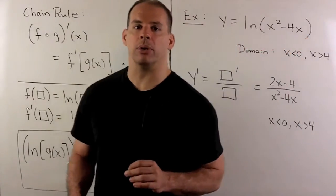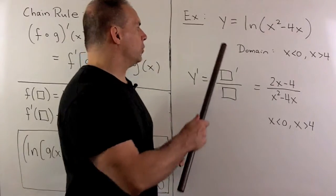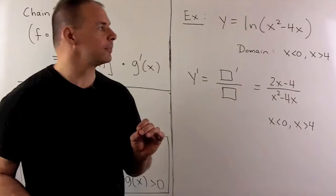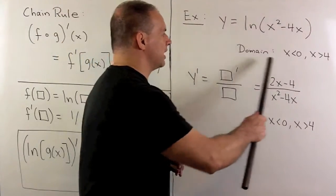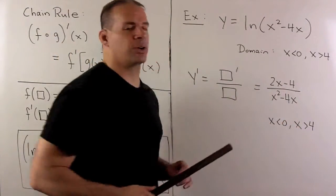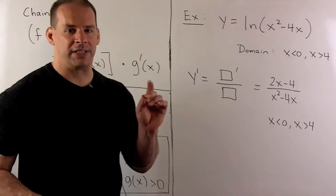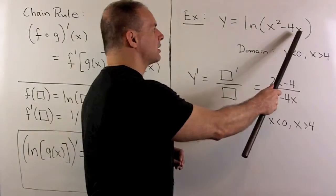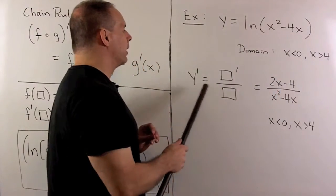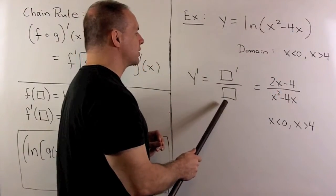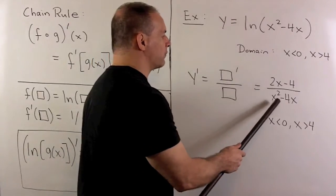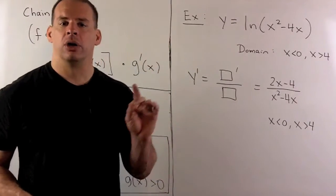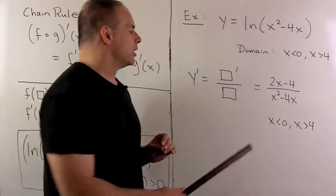Let's apply this to y equal to natural log of x squared minus 4x, whose domain we know is x less than zero or x greater than four. What's in the box is x squared minus 4x, so we get box prime over box: the derivative 2x minus 4 goes in the numerator and x squared minus 4x goes in the denominator. That's our derivative.